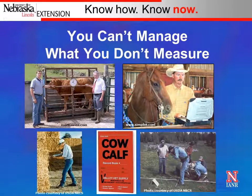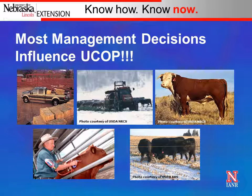You can't manage what you don't measure. To get a handle on unit cost production values, we need basic financial and production record-keeping. Almost every decision you make on a ranch influences unit cost production. For example, if you buy a pickup used primarily in weaned calf production, that cost needs to be allocated to the cow herd over the pickup's expected life. Similarly, your tractor and feed outfit, bull expense, and vaccines all influence unit cost production.